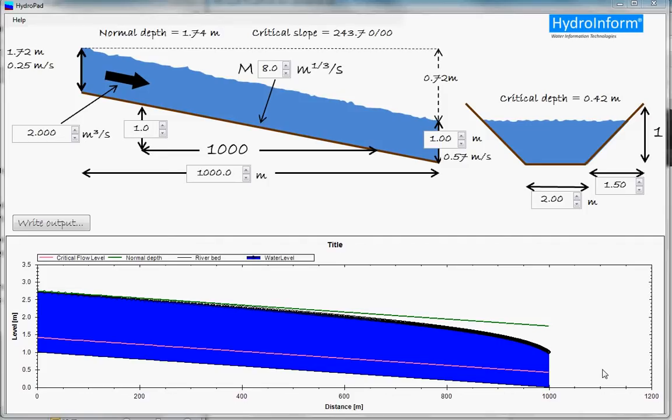However, in situations where you simply want to get an idea of the surface profile or some of the key parameters, HydroPad may be useful. The nice thing about HydroPad is that the hydraulic consequences of changing various parameters are immediately displayed when you make the changes. In this way, you can get a feel of how the parameters influence the flow.